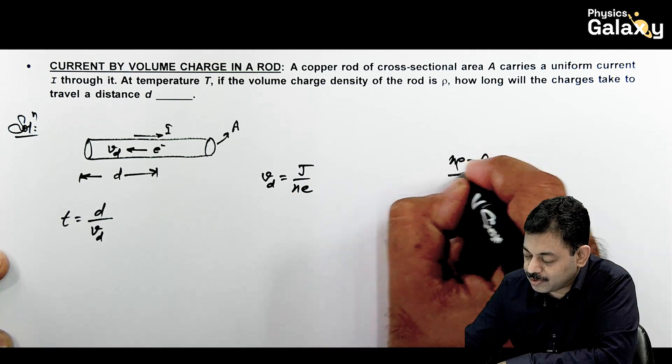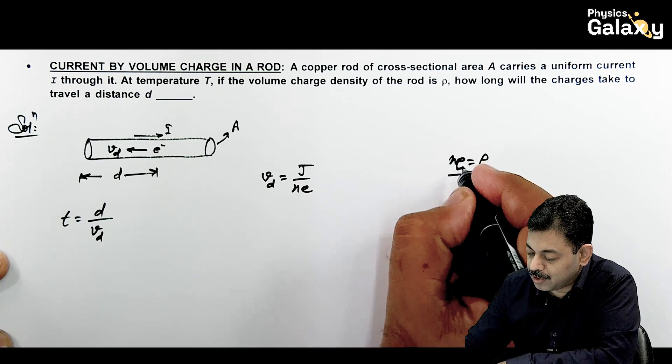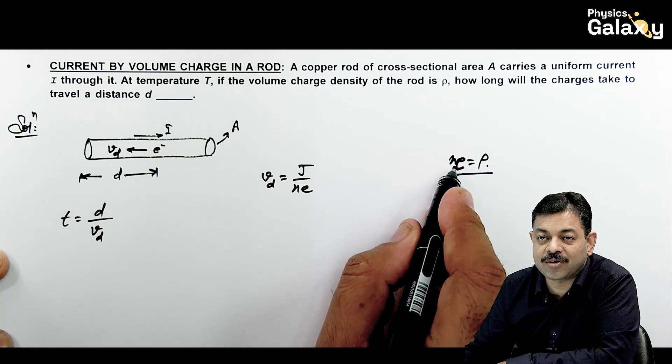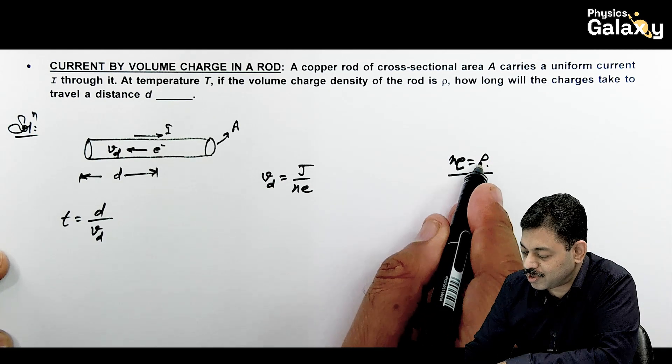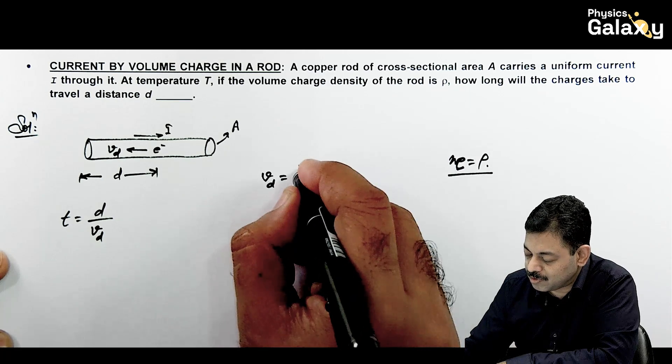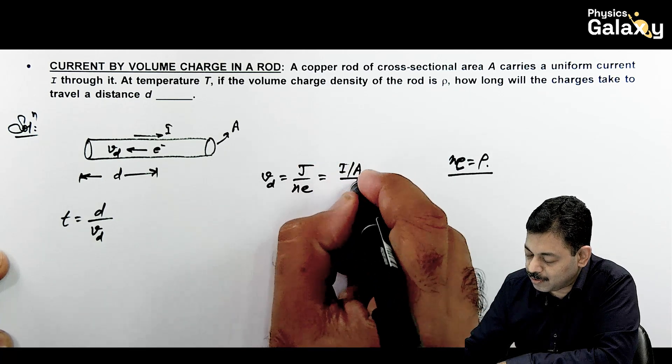So here what is N E? N E is the volume charge density rho, because N here is the number of electrons per unit volume, and E is the electron charge. So rho can be written as N E. So this J can be written as I by A divided by rho.